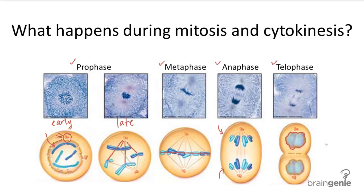Cytokinesis finishes up this division by creating a cleavage furrow that pinches the cell in half. In plant cells, a cell plate forms instead, which is basically the new plant cell wall forming in both daughter cells.